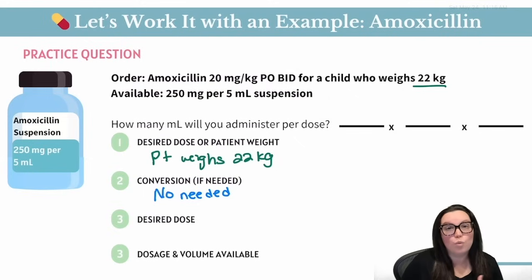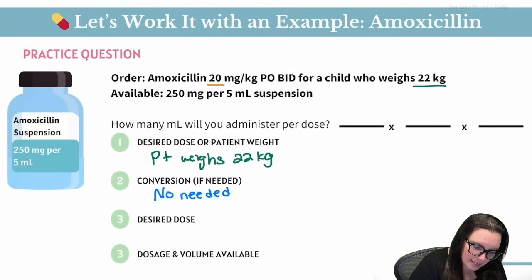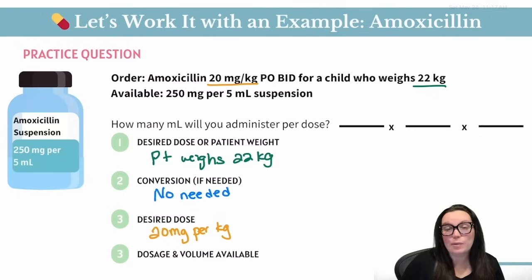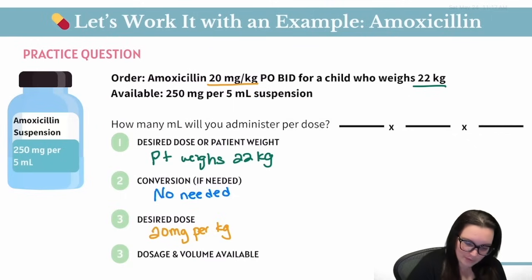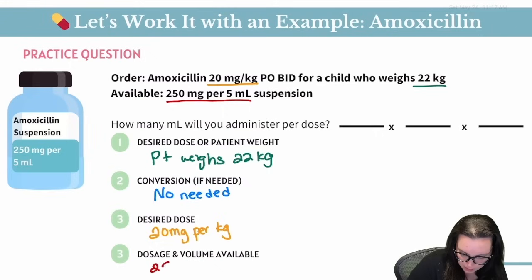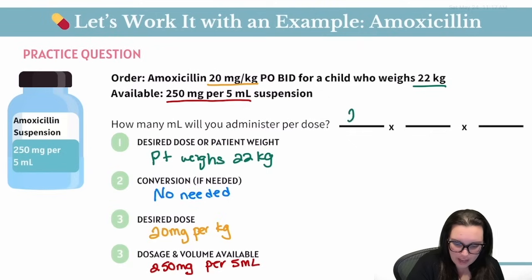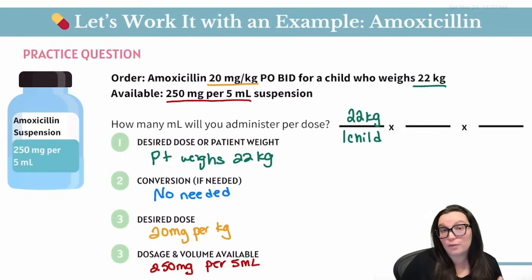Because it's a weight-based dosage calculation, we start with the patient's weight: 22 kilograms. No conversion is needed since the patient is already in kilograms instead of pounds. Next, we figure out our desired dose: 20 milligrams per each kilogram. And lastly, our dosage and volume available: 250 milligrams per every 5 mls.